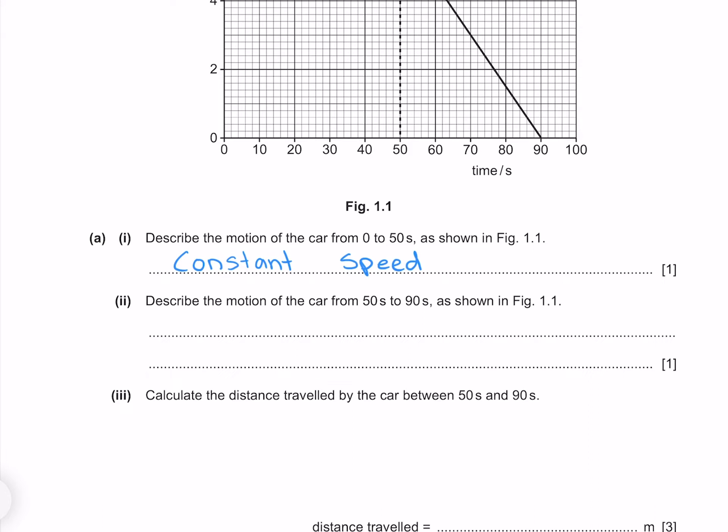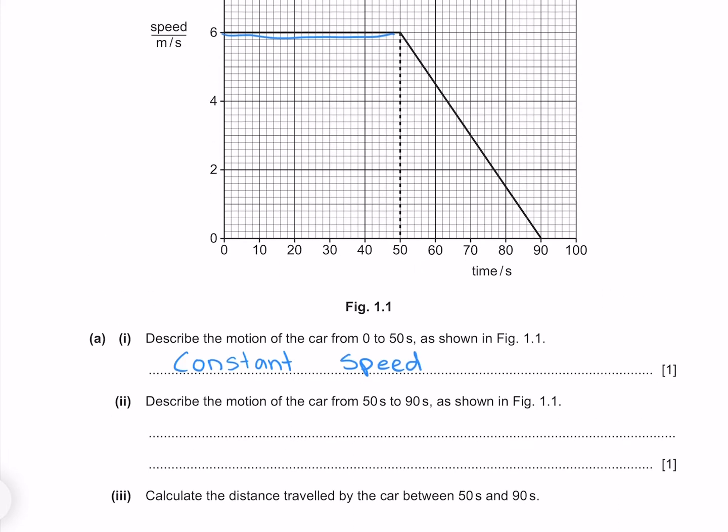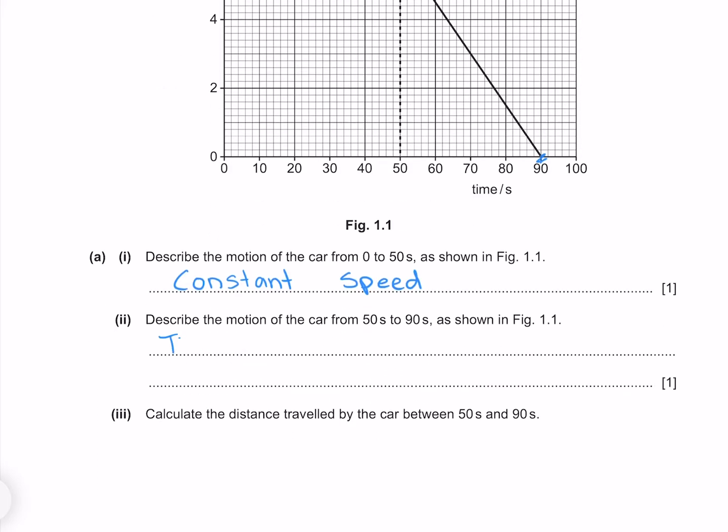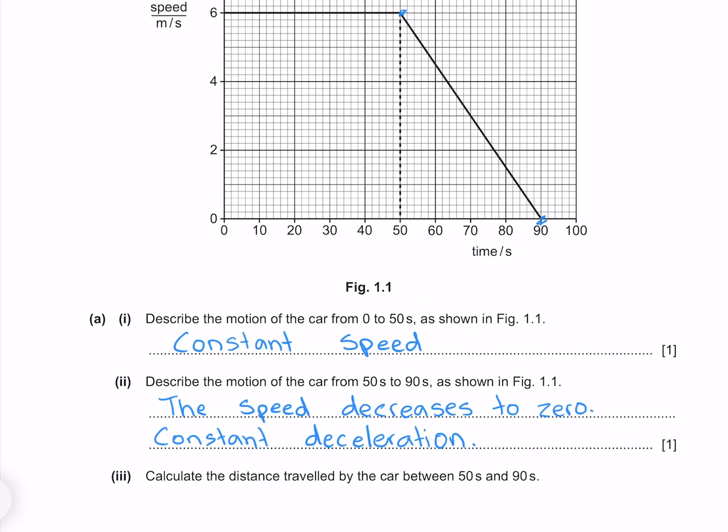Describe the motion of the car from 50 seconds to 90 seconds as shown in figure 1.1. From 50 seconds to 90 seconds, we see the speed reduced to zero. The speed decreases to zero. Furthermore, we see that this is constant deceleration because our slope and therefore our acceleration is constant over this time.